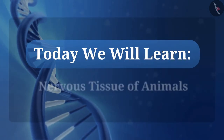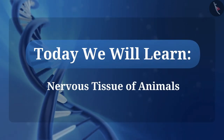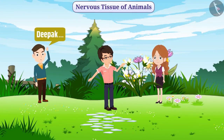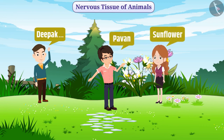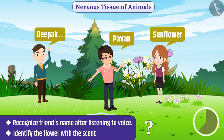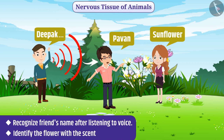Today we will learn about the nervous tissue of animals. We recognize the name of a friend only by hearing his voice; similarly, only by fragrance we can identify a flower. We identify the changes occurring around us and on the basis of these changes we give reactions.